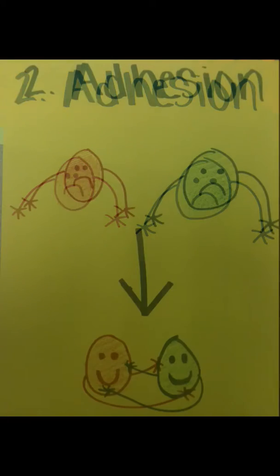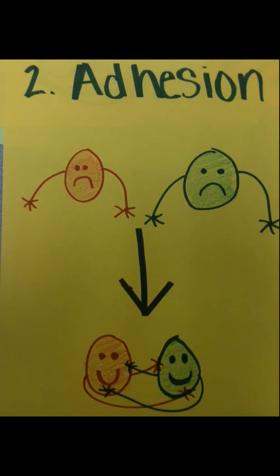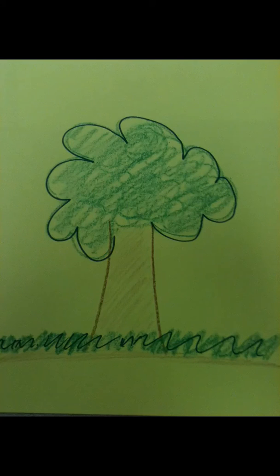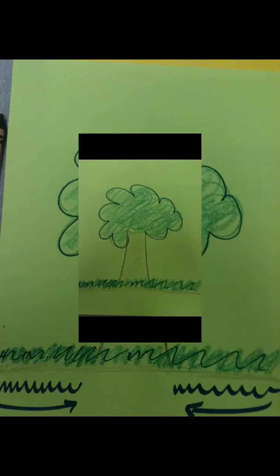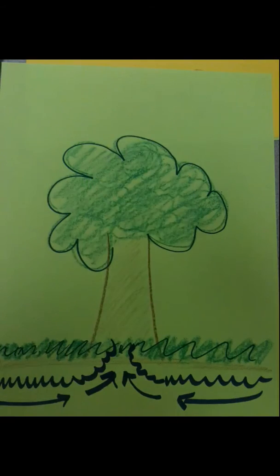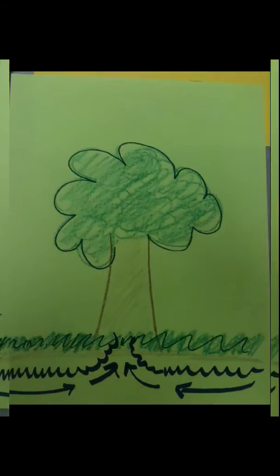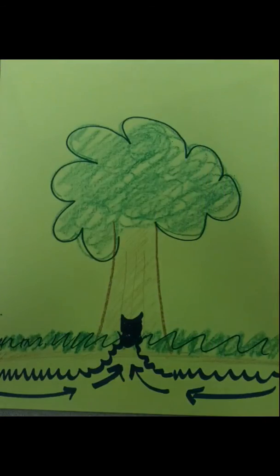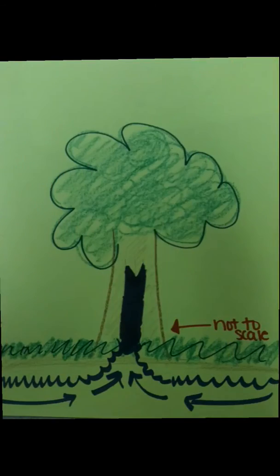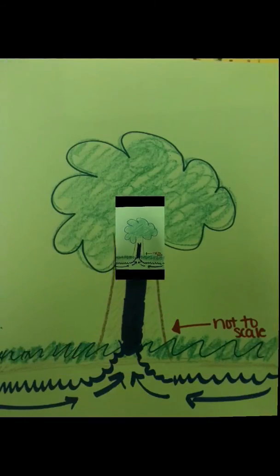The second factor is adhesion, which is the tendency of some substances to be drawn to unlike substances. An example of this is a tree sucking up water in the ground by its cellulose fibers that form small capillaries known as xylem. As the fluid gets drawn up, it forms a meniscus along the edges of the xylem.